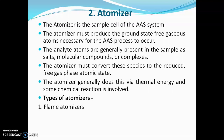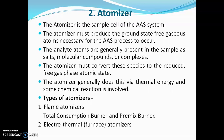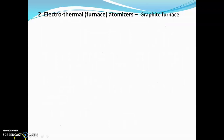Types of atomizer: the first is the flame atomizer and the second is electrothermal atomizers, also known as furnaces. Flame atomizers include the total consumption burner and the pre-mix burner, which were covered in the flame photometer video. Now we will go directly to the electrothermal atomizer, also known as the graphite furnace.